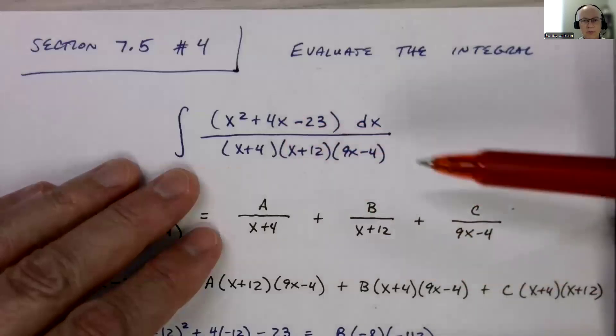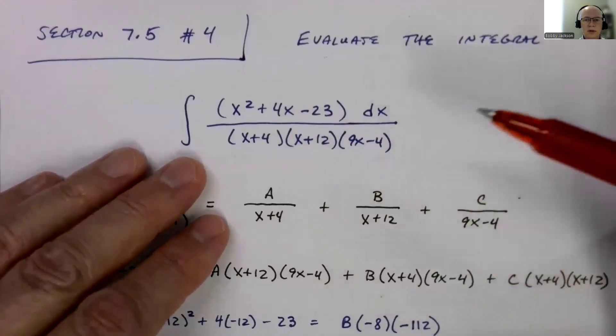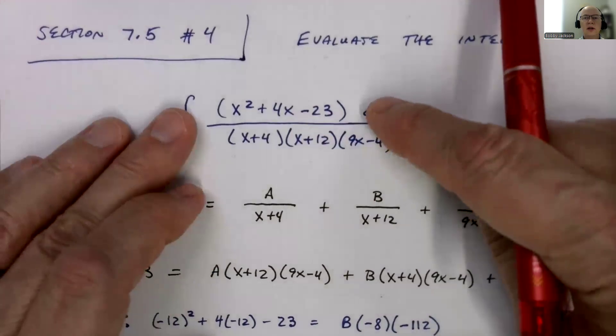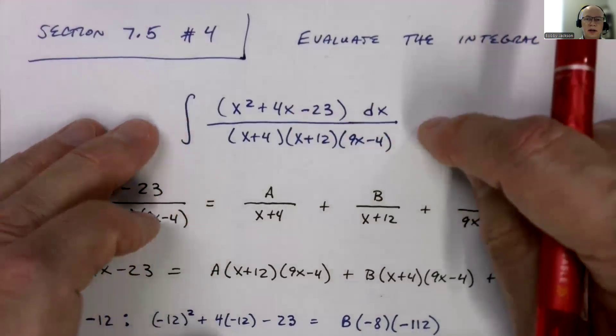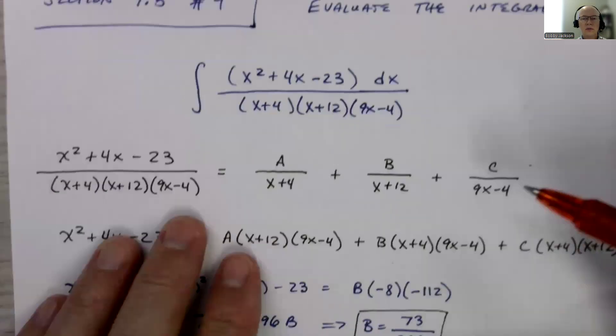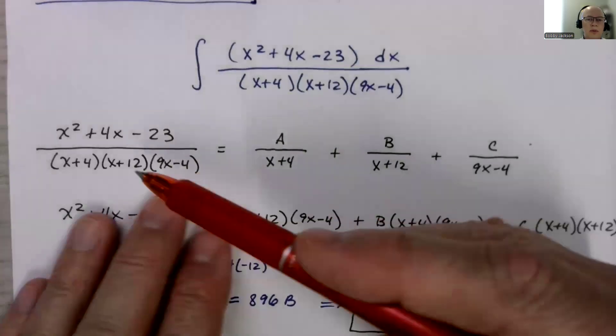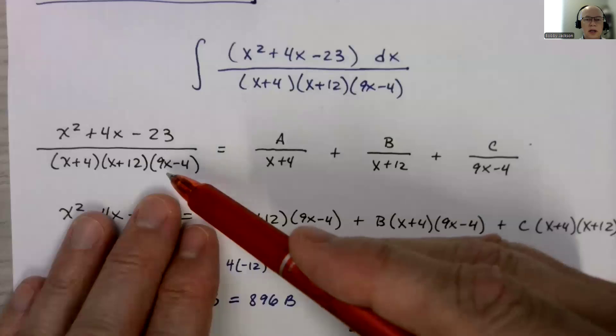So it's in the form that we need it to be in to use the partial fraction decomposition method, which is basically to break this rational expression up into a sum of smaller fractions that we can easily or more easily integrate. So we're going to find the antiderivative of this function here. So remember how this will work. The denominator is factored. We have three different linear factors.